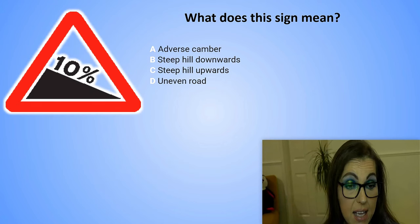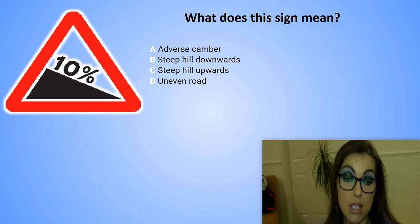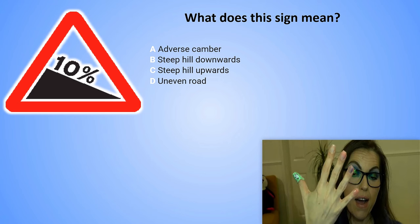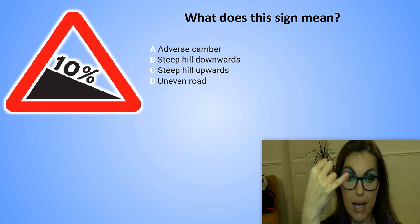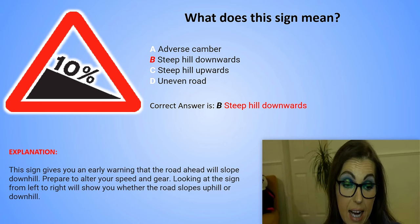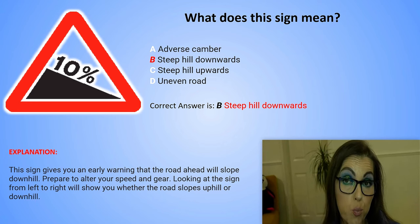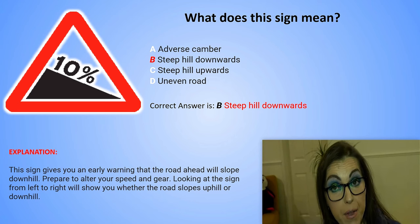And the last question for today's test. What does this sign mean? A. Adverse camber. B. Steep hill downwards. C. Steep hill upwards. D. Uneven road. The correct answer is B. Steep hill downwards. Explanation: This sign gives you an early warning that the road ahead will slope downhill. Prepare to alter your speed and gear. Looking at the sign from left to right will show you whether the road slopes uphill or downhill.